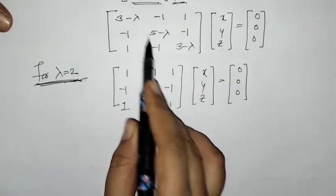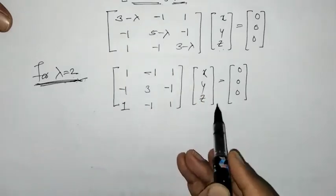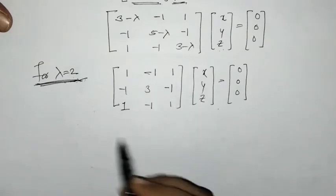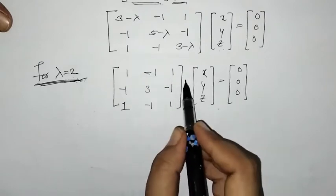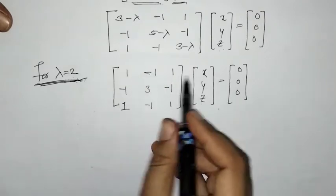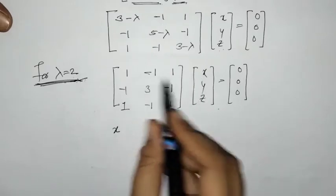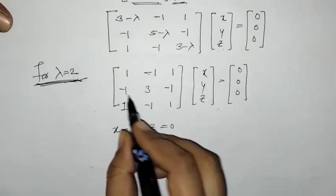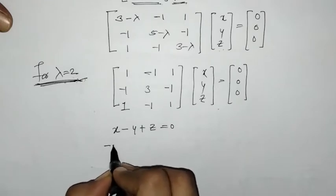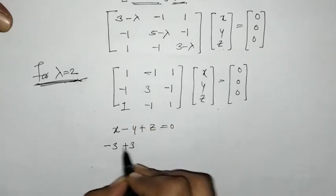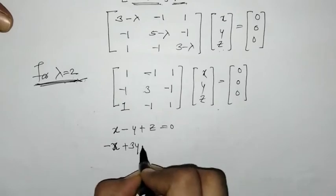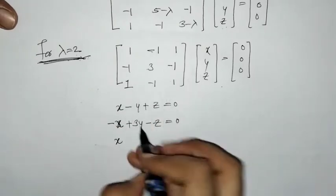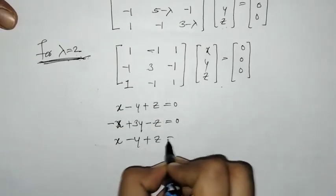We put lambda equals 2 in this matrix equation and got this matrix equation. Now we do the matrix multiplication to get the linear equations: x minus y plus z equals 0, minus x plus 3y minus z equals 0, and x minus y plus z equals 0.